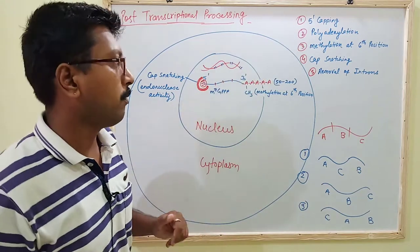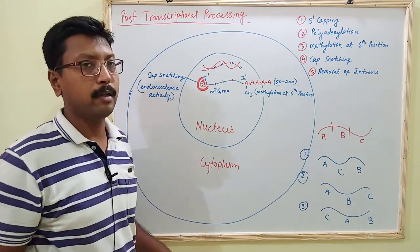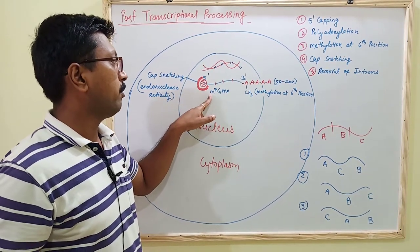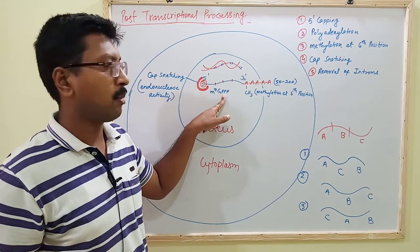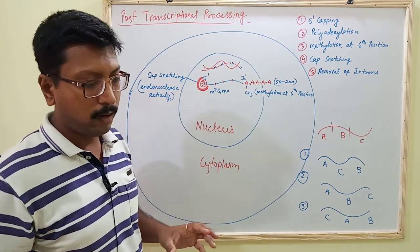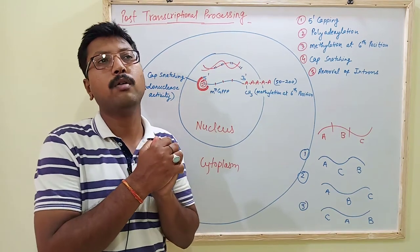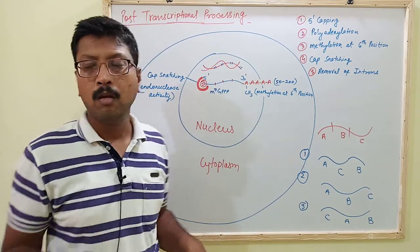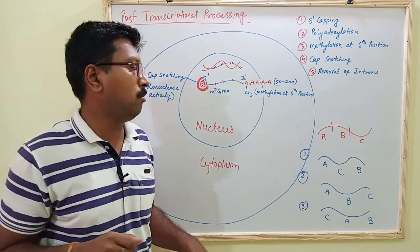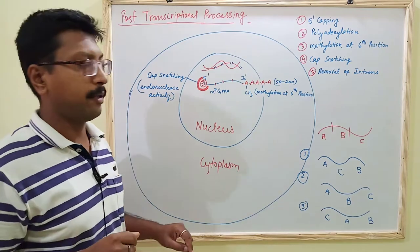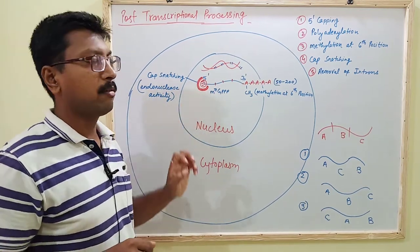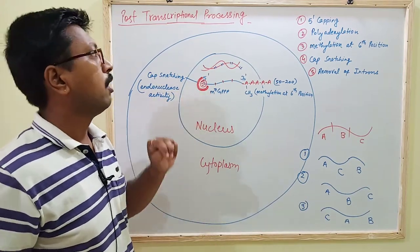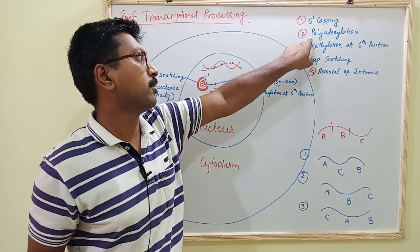First is 5' capping. The 5' capping is a capping at the 5' end of the mRNA, and the cap is the seven methyl guanosine phosphate. This capping is required for attachment of the mRNA to the ribosome in the cytoplasm, and it is also required for the triggering of translation. So it has two functions.